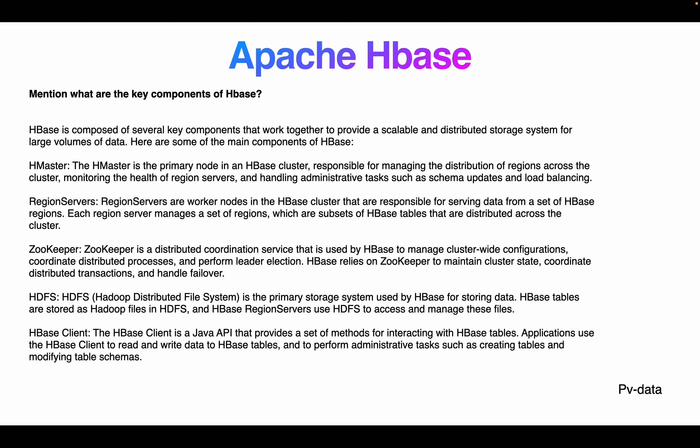ZooKeeper is a distributed coordination service used by HBase to manage cluster-wide configuration, coordinate distributed processes, and perform leader election. HBase relies on ZooKeeper to maintain cluster state, coordinate distributed instructions, and handle failover. HDFS (Hadoop Distributed File System) is the primary storage system used by HBase for storing data; HBase tables are stored as Hadoop files. The HBase Client is a Java API that provides methods for interacting with HBase tables — applications use it to read and write data and perform administrative tasks such as creating and modifying tables and schemas.